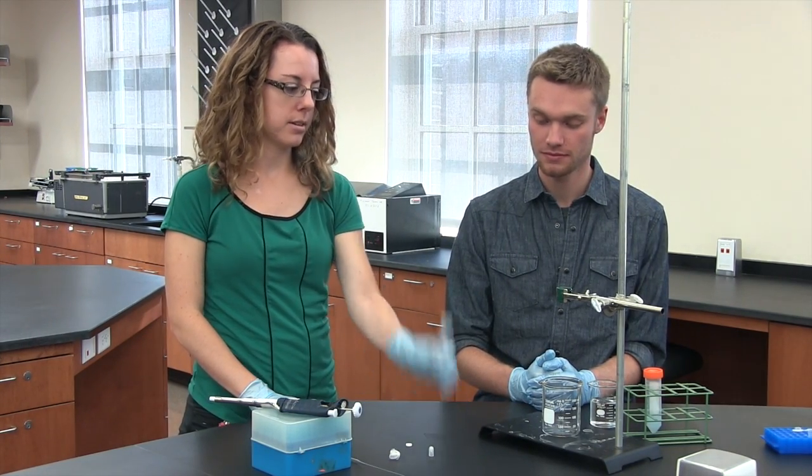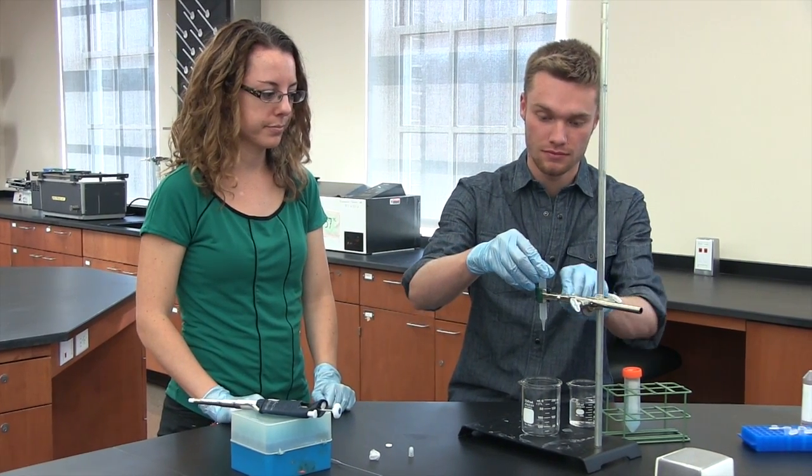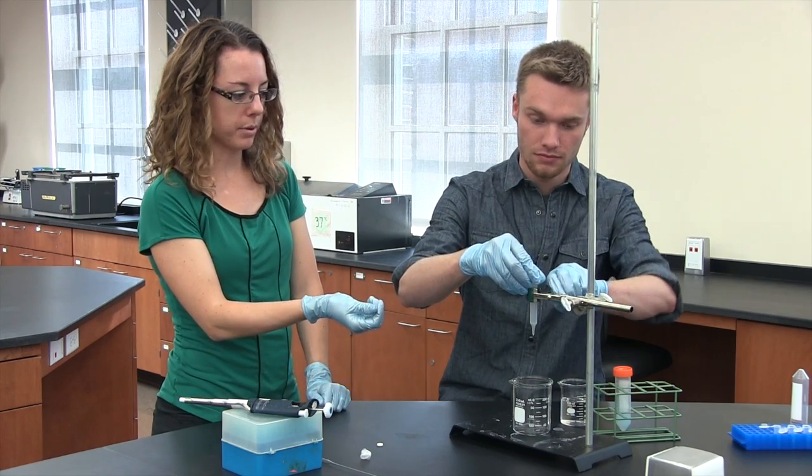The first thing you need is the empty plastic column. You can put that into the clamp and then put the cap on the bottom.